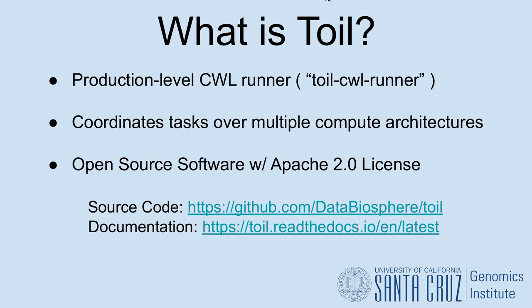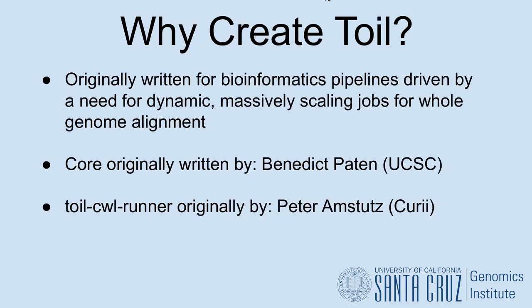Toil is one of these runners. It's an open-source Apache 2-licensed, production-level CWL runner. Toil aims to be powerful in both how you're able to configure your workflow runs and its ability to scale. The core of Toil was originally created by Benedict Payton at UCSC to coordinate whole genome alignments, which can have rather large graphs and benefited from Toil's ability to dynamically generate tasks.